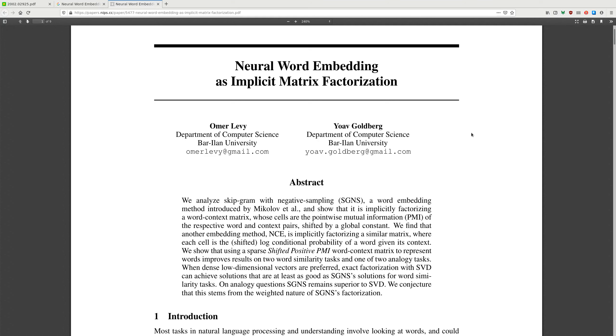We show that using a sparse shifted positive PMI word context matrix to represent words improved results on two word similarity tasks and one of two analogy tasks.